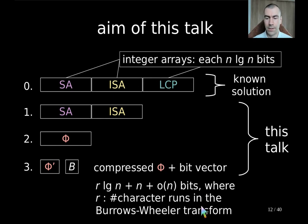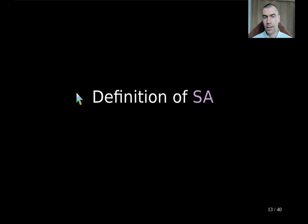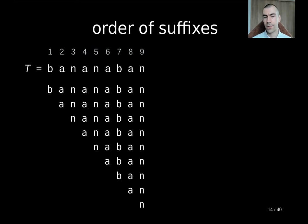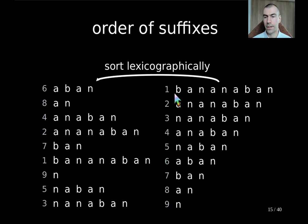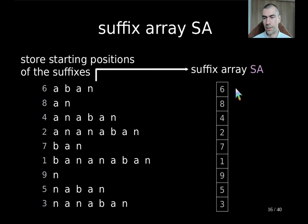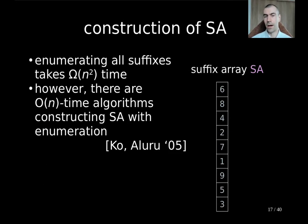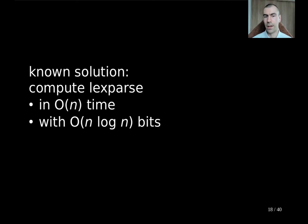So the first ingredient is the suffix array SA. The suffix array is defined on the order of the suffixes. We take the text, take all its suffixes, write the starting position before each suffix, then sort the suffixes lexicographically keeping along these starting positions. Writing these numbers into an array gives us the suffix array. If we did that naively, writing all suffixes would take n squared time, which is prohibitive. Luckily there are algorithms computing the suffix array in linear time, and this is used in the known solution.